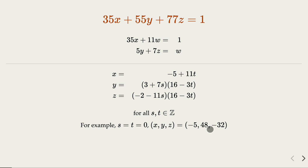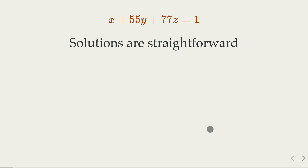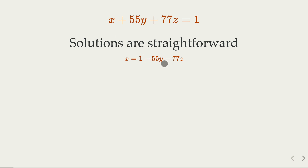Let's look at the second method. In this method, we try to use parameters with what is called a canonical form. Notice that for an equation where one coefficient is 1, the solution is straightforward even with three variables. Since the GCD is always 1 in that case, it always has infinitely many solutions, and we simply express x in terms of y and z, where y and z can take any integer values.